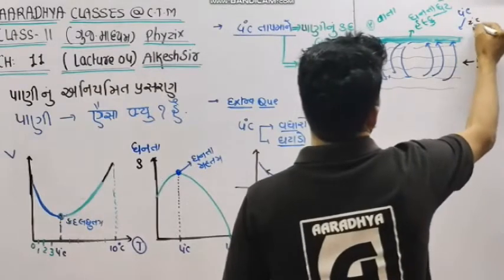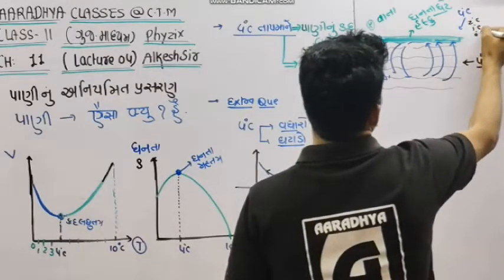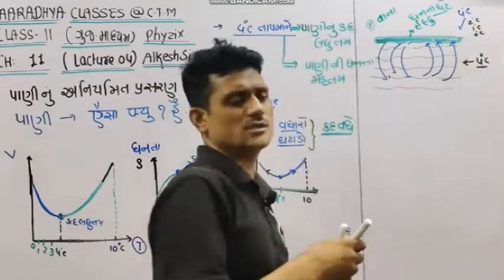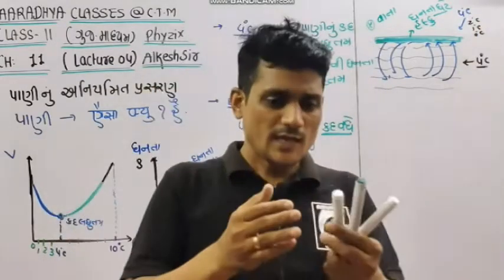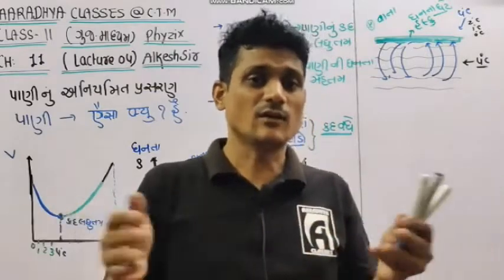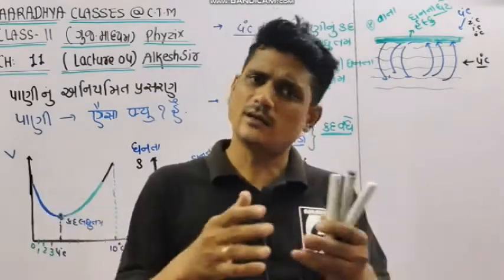2 degrees Celsius, 1 degree Celsius, 0 degrees Celsius — then we can start bringing the temperature of the water down.